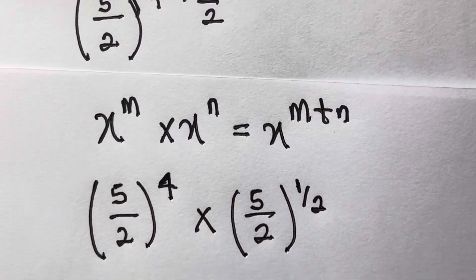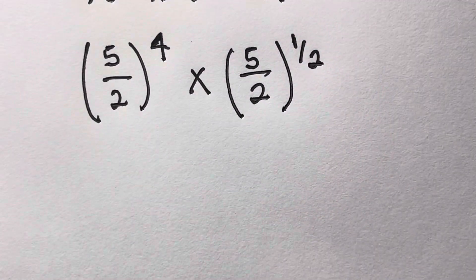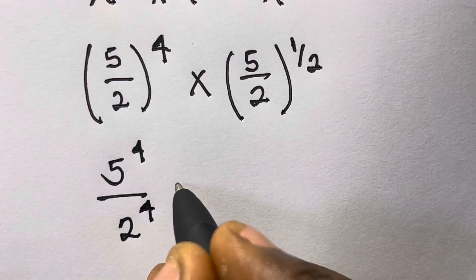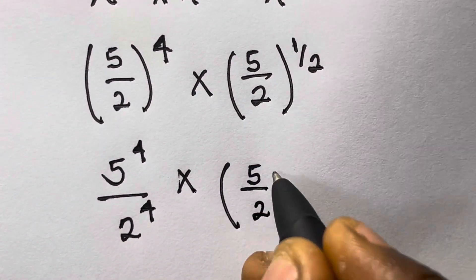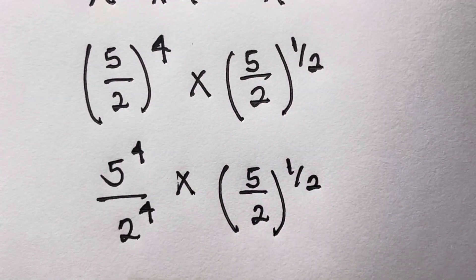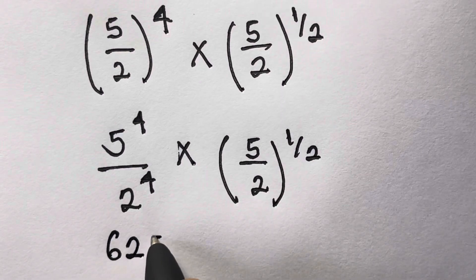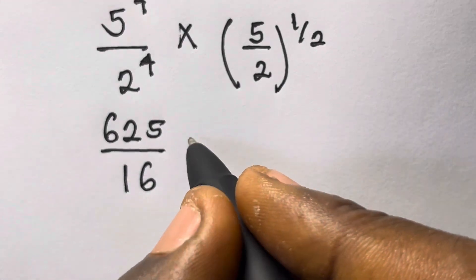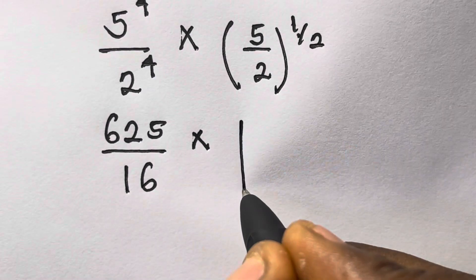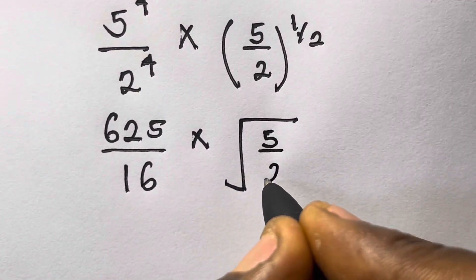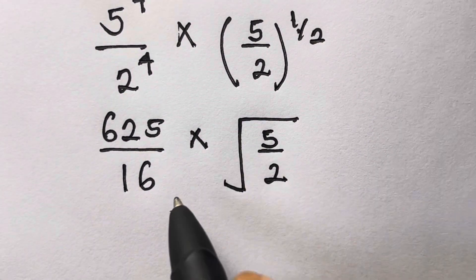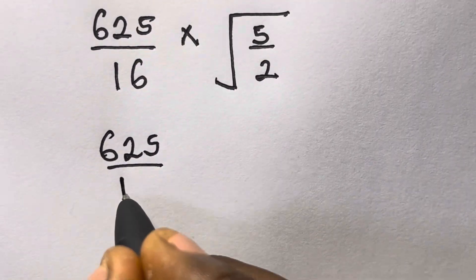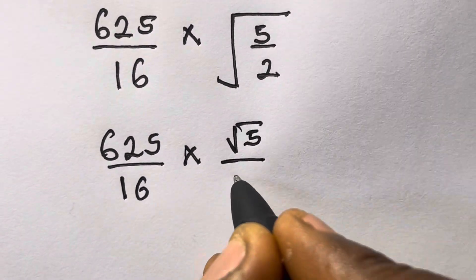We distribute the power. We have 5 raised to the power 4 divided by 2 raised to the power 4, multiplied by 5 divided by 2 raised to the power 1 over 2. Now 5 raised to the power 4 gives us 625 and 2 raised to the power 4 gives us 16. The power of 1 over 2 means square root, so we have 5 divided by 2 under a square root.